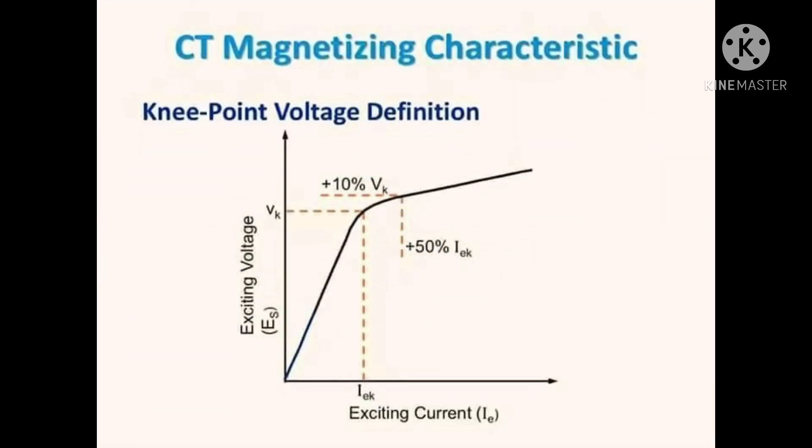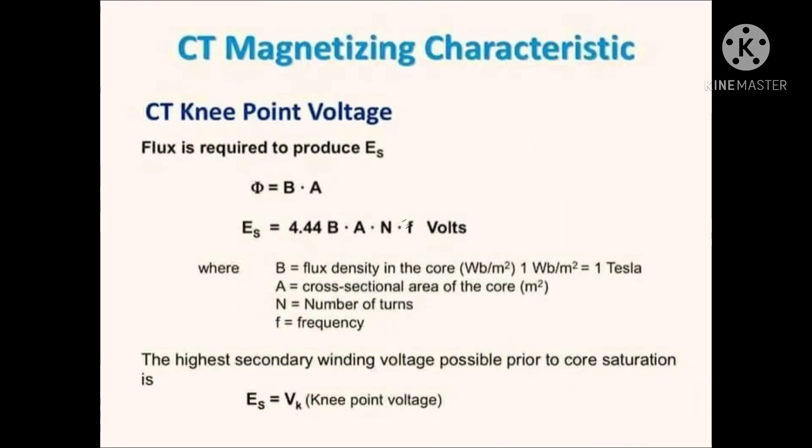The point where CT saturates is also known as the knee point, which according to IEC, is the voltage at which a 10% increase in voltage of CT secondary results in a 50% increase in secondary current. For voltages greater than the knee point voltage, the magnetizing current increases considerably even for small increments in voltage across the secondary terminals.